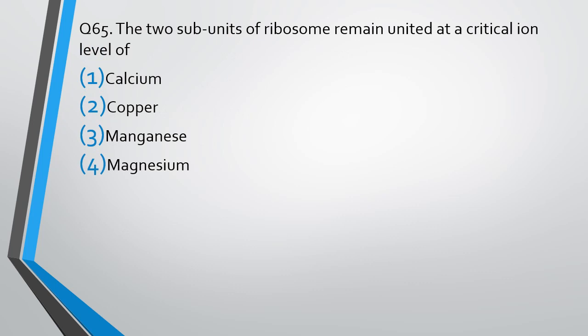Question number 65. The two subunits of ribosomes remain united at a critical ion level of: calcium, copper, manganese, magnesium. Which of the ions is responsible for the ribosome subunits to remain united? The correct answer is option 4, magnesium.